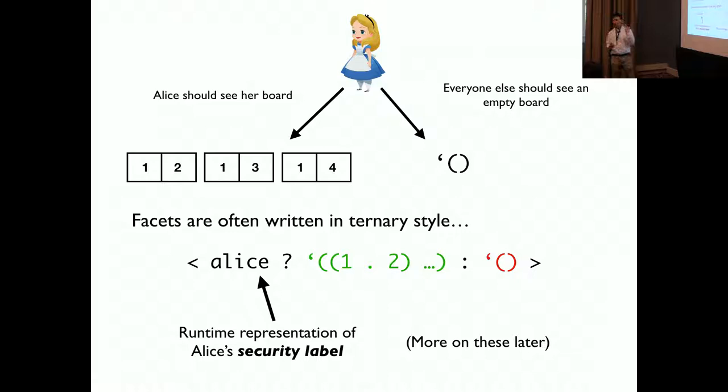Facets are often written in a ternary style. They consist of Alice, which is the runtime representation of Alice's security label. And the left side is her private data, which is the Alice board, a list of x y pairs. And the right side is an empty board, an empty list, which is non-Alice data.